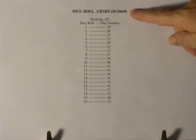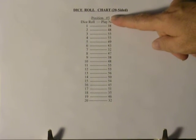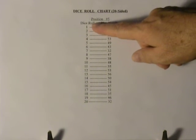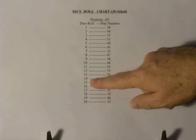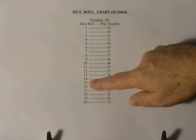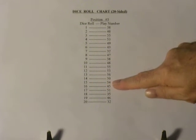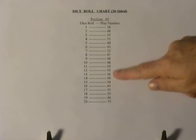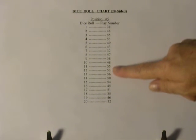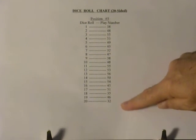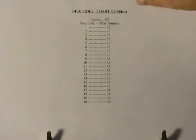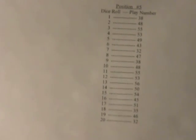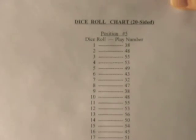Dice roll chart, 20-sided, position five. Dice roll column — you roll the dice and get a fifteen. You come over here and the play number is fifty-four. That is the play number you write down. And a little closer look.